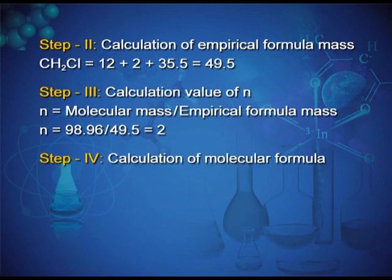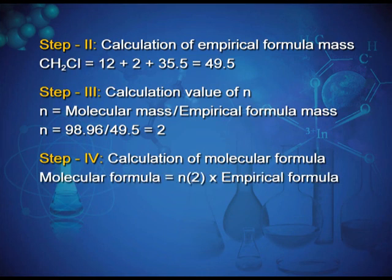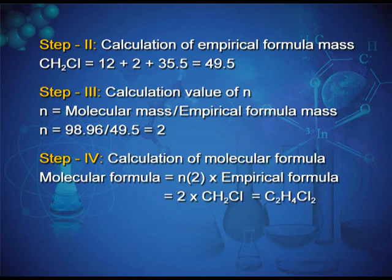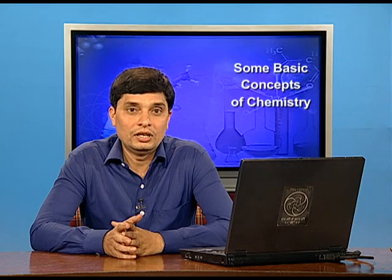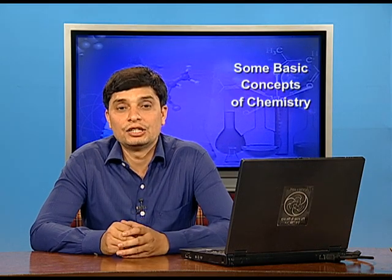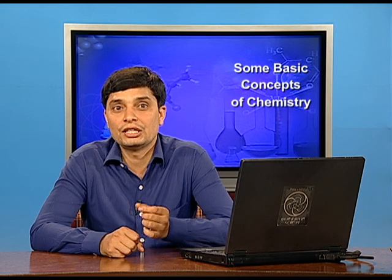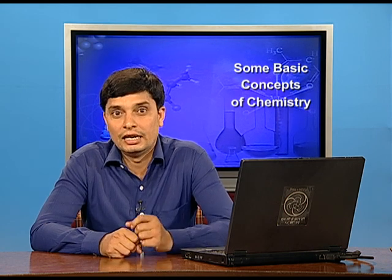Step 4 — calculate molecular formula: molecular formula = N × empirical formula = 2 × CH₂Cl = C₂H₄Cl₂. In the next lecture we will study stoichiometry and stoichiometric calculations, and limiting reagents. Thank you.